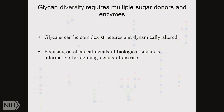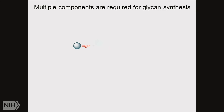Thank you, John. I'm going to spend the next few minutes talking about the molecular details of what John covered. What I'm going to argue is that being able to understand exactly what's happening on both a biological and chemical level for all of the pathways required for glycan synthesis will be incredibly important for understanding the molecular details of the congenital disorders of glycosylation. These glycans are chemically incredibly complex — they can be very large and are dynamically altered.